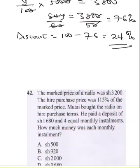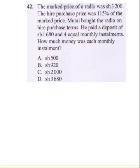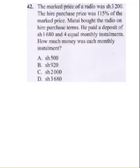The next question says: the marked price of a radio was 3,200 shillings. The hire purchase price was 115% of the marked price. He bought the radio on hire purchase terms — he paid a deposit of 1,680 shillings and four equal monthly installments. How much money was each monthly installment?